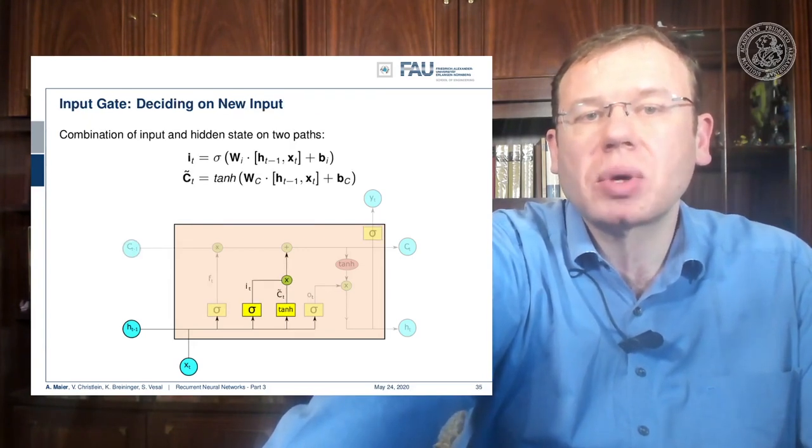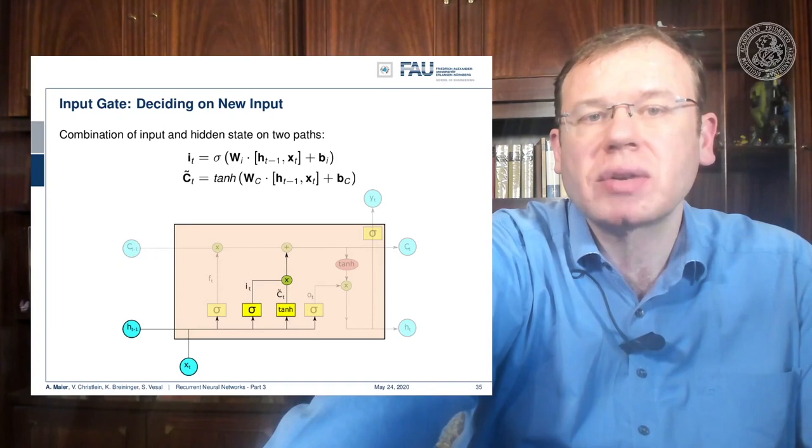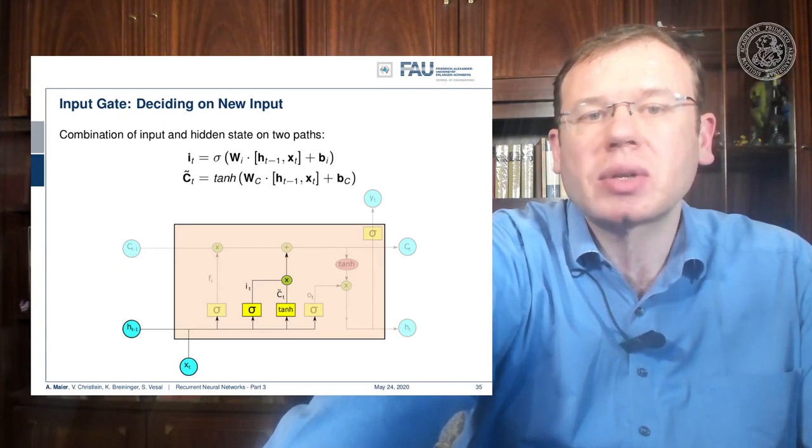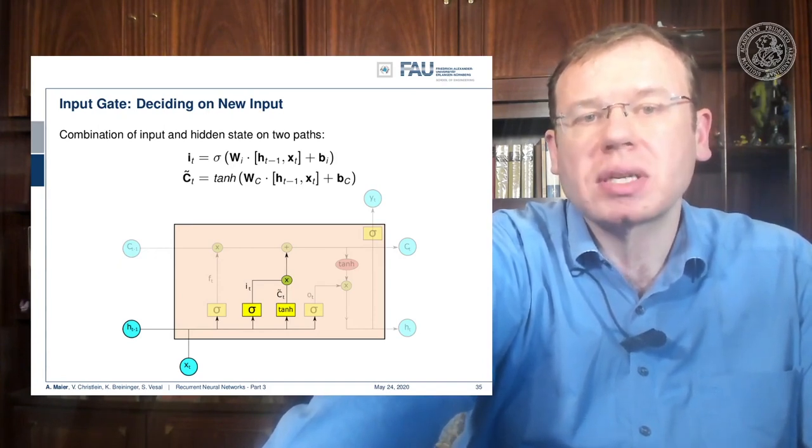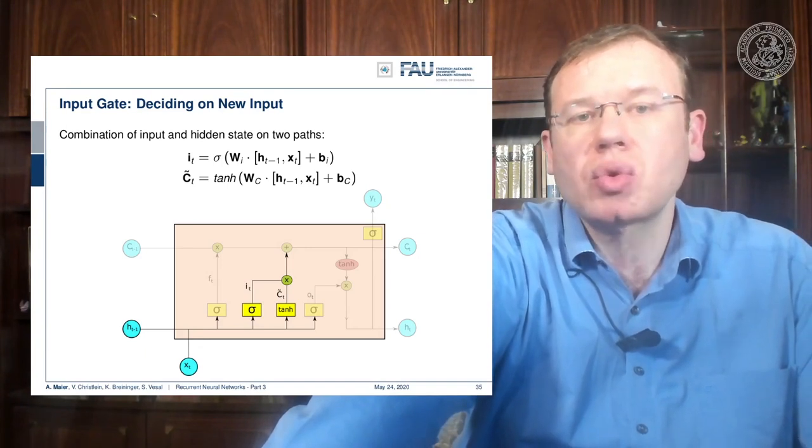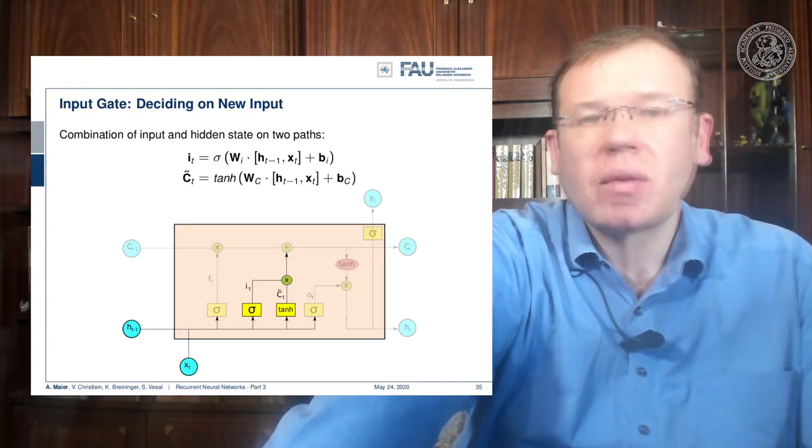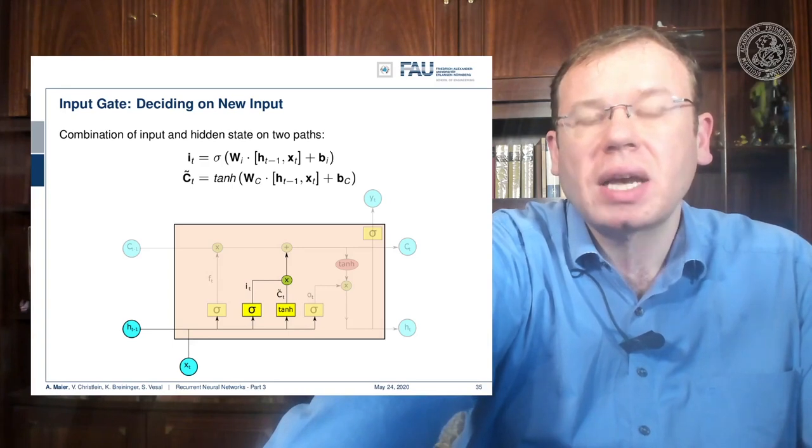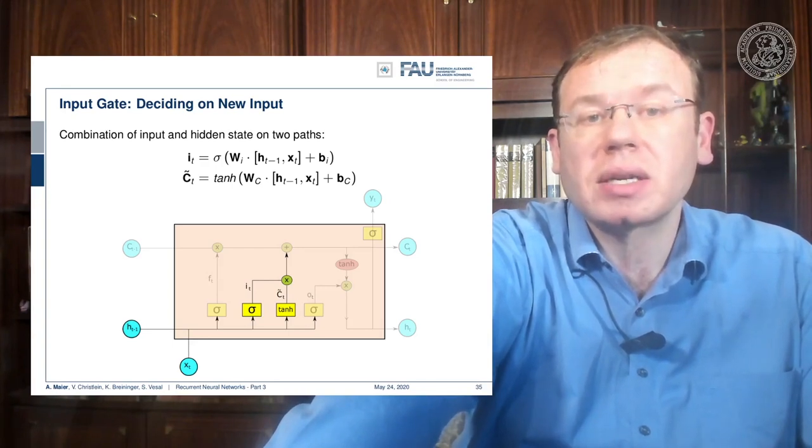Now we also need to put in new information, and for the new information we have to somehow decide what information to input into the cell state. So here we need two activation functions. One that we call IT that is also produced by a sigmoid activation function.